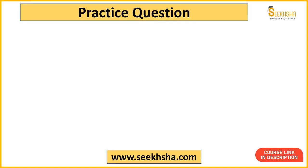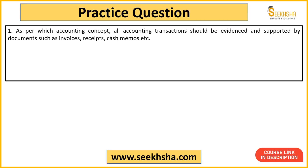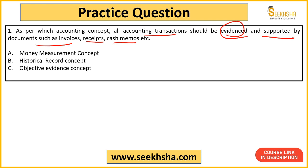Let us quickly start. This is the first question: As per which accounting concept, all accounting transactions should be evidenced and supported by documents such as invoices, receipts, and cash memos? Jo bhi aap accounting transaction record kar rahe ho, uske support mein aapke paas ek valid document hona chahiye. Ye kunsa accounting concept bolta hai? Option A: Money Measurement Concept, B: Historical Record Concept, C: Objective Evidence Concept, D: None of the above.